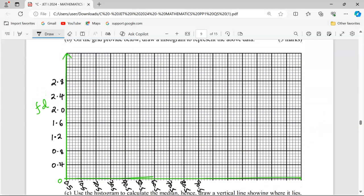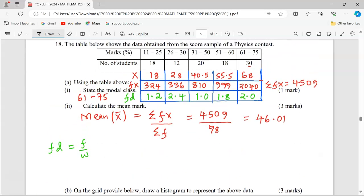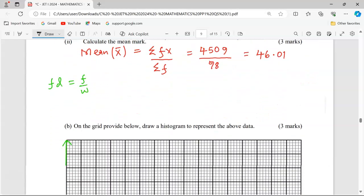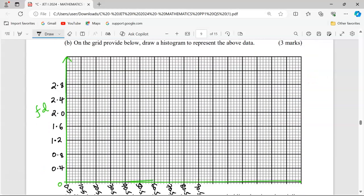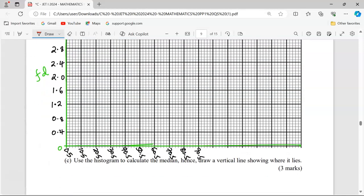Let me now start plotting. The first class will start from the lower boundary of 10.5 to the upper boundary of 25.5, and the height, which is the frequency density, is 1.2. This is where we're going to reach, the height is 1.2 and we are moving all the way to 25.5. That is the first bar.